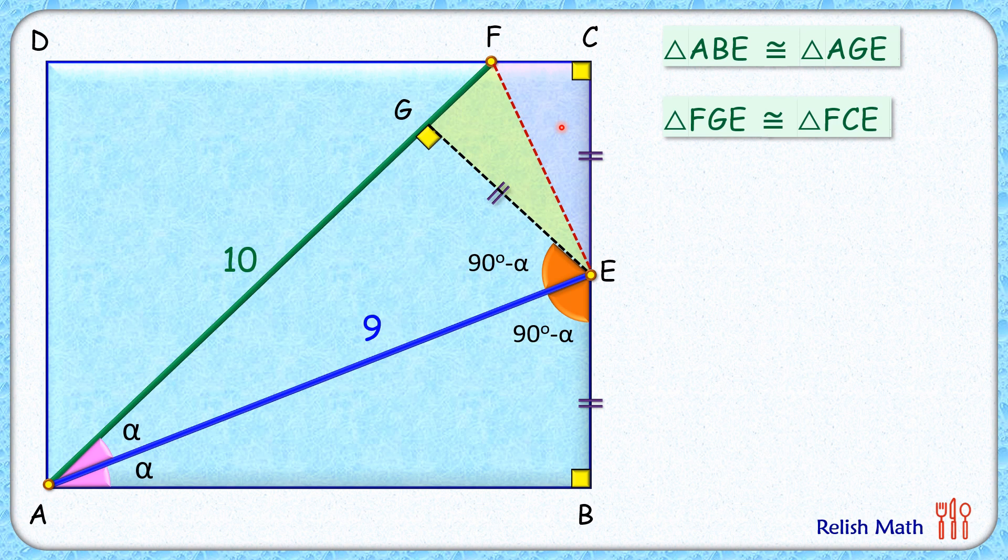As the triangles are congruent, thus corresponding angles will be equal. But if you look at this angle, this is 180 minus 2 alpha. So these two angles combined will be 2 alpha, or each angle will be alpha degrees. And this angle here, that's 90 minus alpha plus alpha, so this angle will be 90 degrees. Now let's remove every extra information here.